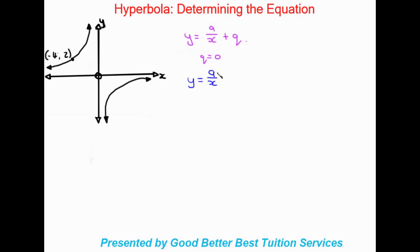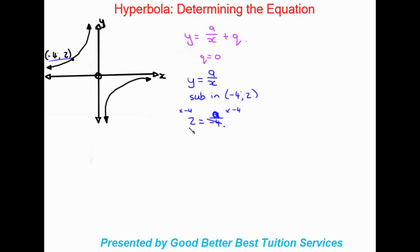All we need to do now is find the value of a by substituting in the given x and y values of minus four and two. So substituting in, we get: two is equal to a over minus four. To get a by itself, we multiply both sides by negative four, giving us minus eight is equal to a. Therefore our final equation is y is equal to minus eight over x.